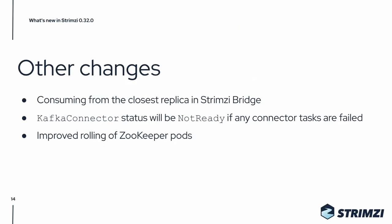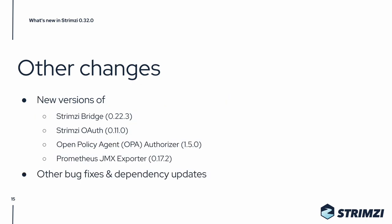There are also many other changes. For example, the Strimzi Bridge can now consume messages from the closest replica. Or the status of the Kafka connector resource will now be marked as not ready if any of the Kafka connector tasks are marked as failed. Or there is an improvement to the rolling of the ZooKeeper pods to make sure that when one of the pods cannot be started, the operator will not roll down the other pods. There are of course also many updates to the different dependencies and many other bug fixes.